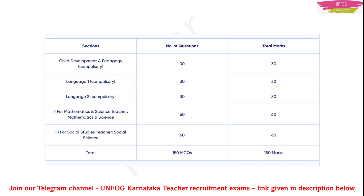The Mathematics and Science syllabus is for Mathematics and Science teachers. In this, Mathematics will be 30 marks and Science will be 30 marks. Then the other syllabus is for Social Studies teachers. It will be of 60 marks with 60 questions.